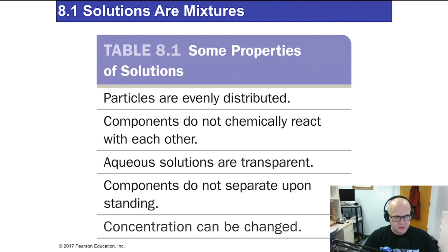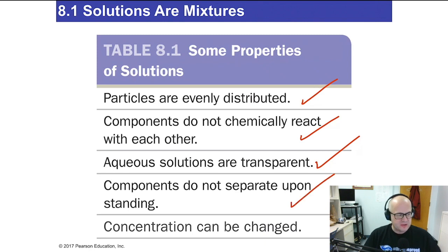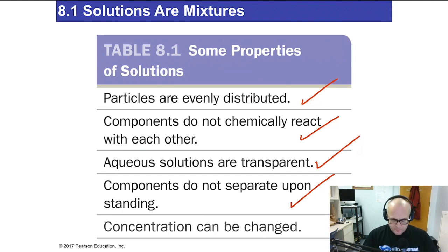Here are some properties of a solution. Particles are evenly distributed — in other words, they're homogeneous. Components do not chemically react with each other; they're simply dissolved into each other, so this is not a chemical reaction. Aqueous and gaseous solutions are transparent. Components do not separate on standing — if you leave a solution in a bottle on a shelf, the solute will never come out. The concentration of a solution can be changed by adding more solvent or more solute.